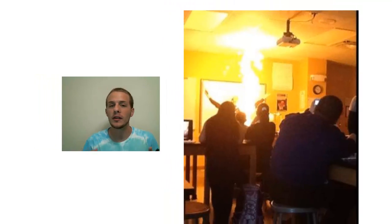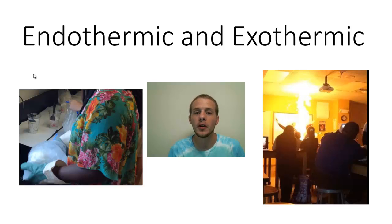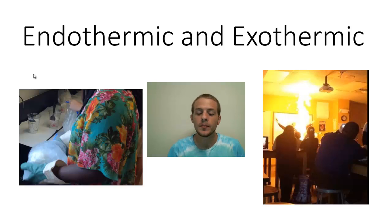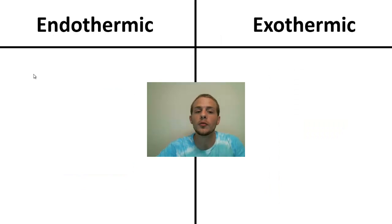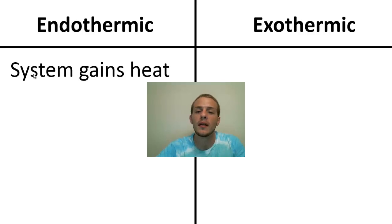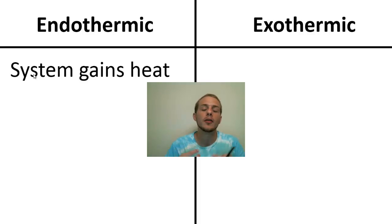Just by hearing the context of the first minute of this video you probably already have an intuitive sense of what an endothermic process is and what an exothermic process is. But let's go ahead and define the two terms and compare and contrast them. For something to be endothermic, by definition that means the system is going to gain heat, and it follows that the surroundings are going to lose heat as that system absorbs heat from the surroundings.